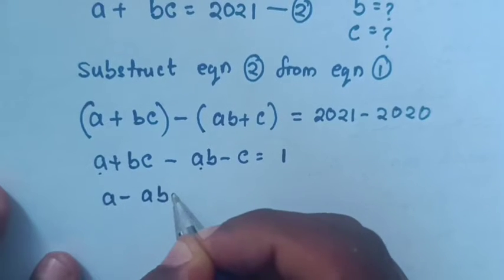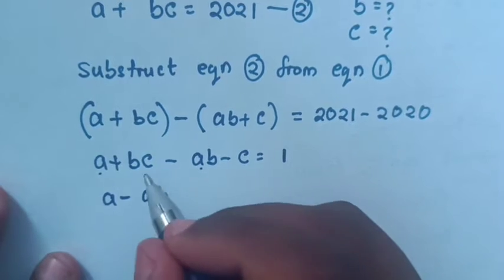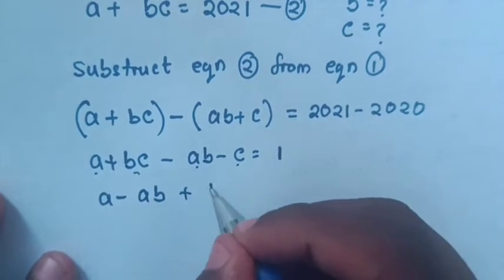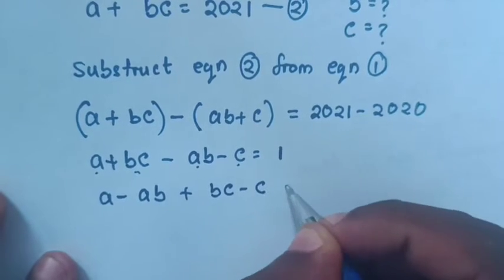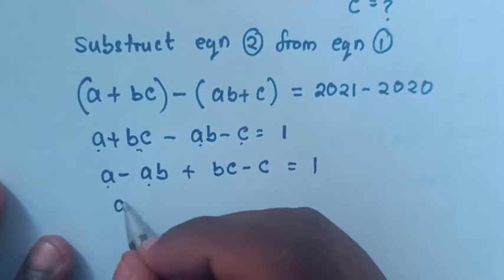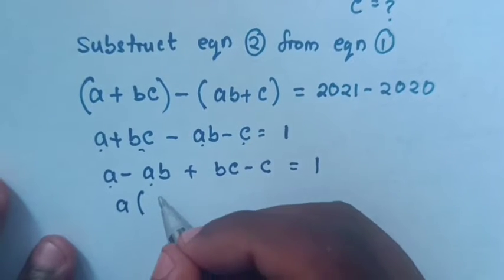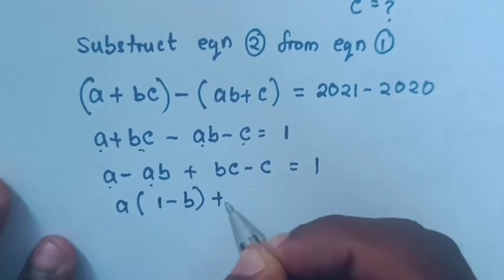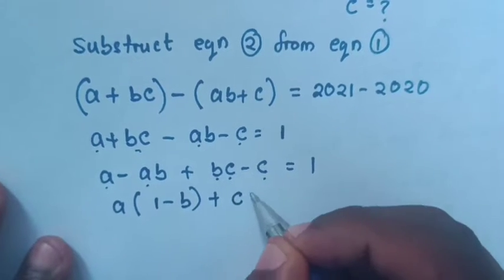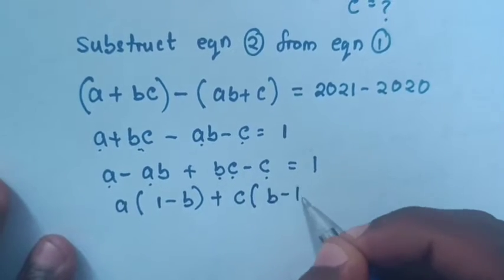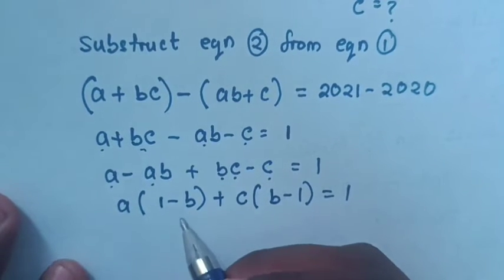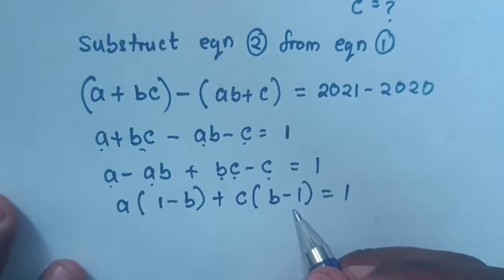So we rearrange to get A minus AB plus BC minus C equals 1. Here A is common, so we factor: A times the bracket (1 minus B), plus here C is common, C times the bracket (B minus 1), equals 1.